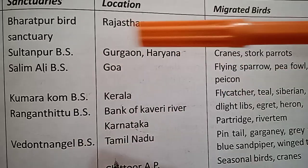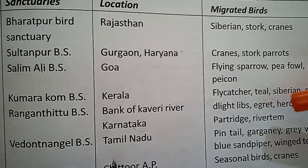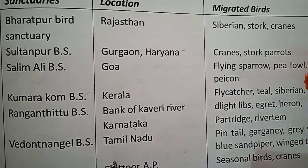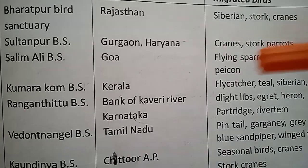Kumarakom Bird Sanctuary, located in Kerala. The migratory birds here include flycatchers and Siberian storks.